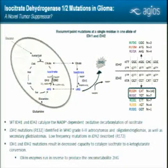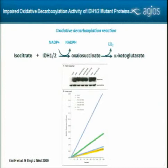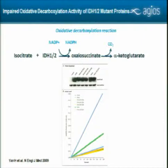Initially these mutations were thought to be loss of function, and were originally thought to be potential tumor suppressors. This is corroborated by work done by Hai Yan, published in the New England Journal of Medicine. When isocitrate is converted into alpha-ketoglutarate, NADPH is produced. Using an assay measuring NADPH production, you can see that IDH2 wild-type or IDH1 wild-type produced lots of NADPH, whereas the mutant enzymes failed to do so.